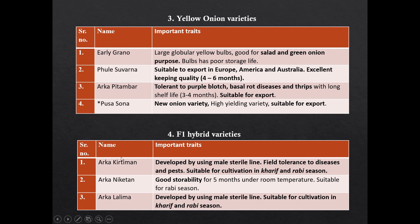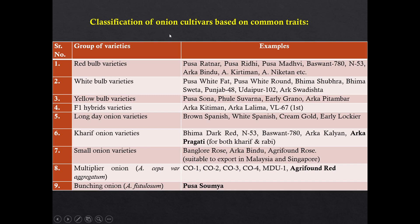F1 hybrids of onion are Arka Kirtiman, Arka Niketan, and Arka Lalima. Arka Kirtiman is developed using a male sterile line — it is suitable for cultivation in both seasons and is tolerant to disease and pest. Arka Niketan has good storage life. Arka Lalima is developed by using a male sterile line and is suitable for both seasons. Classification of different onion cultivars based on common traits includes red bulb varieties, white bulb varieties, yellow bulb varieties, and F1 hybrid varieties.